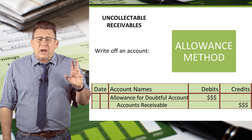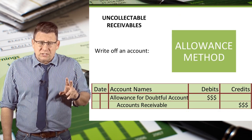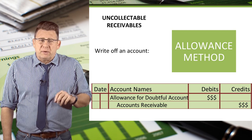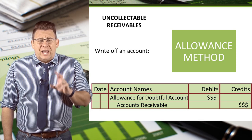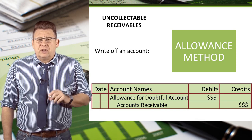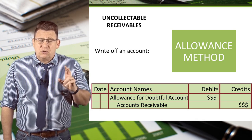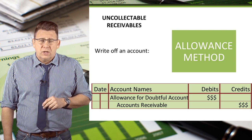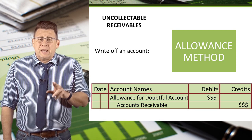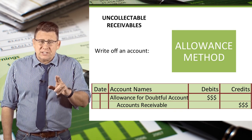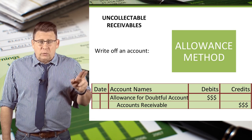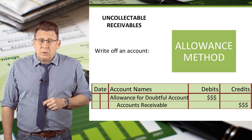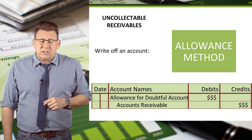When we write off an account with the allowance method, the debit is to the allowance for doubtful accounts and a credit to accounts receivable. Notice the debit is not to bad debt expense — the expense was already recorded when we made the adjusting entry.